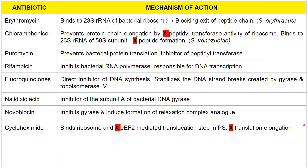Next we have tunicamycin, which inhibits N-linked glycosylation by preventing core oligosaccharide addition to the polypeptide chain. It prevents glycosylation, leading to improper protein folding, and the protein cannot exit the ER.